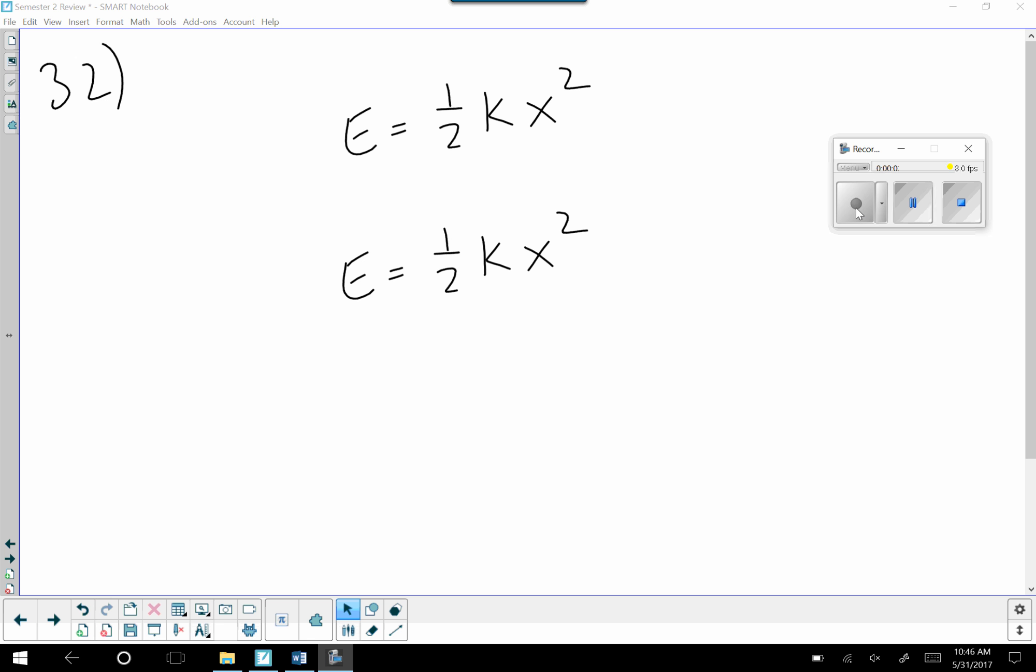Question 32, we're trying to solve for x. So we look at the x and we're multiplying by 1 half, we're multiplying by k, and we're squaring it.